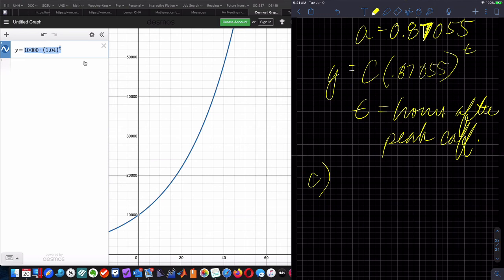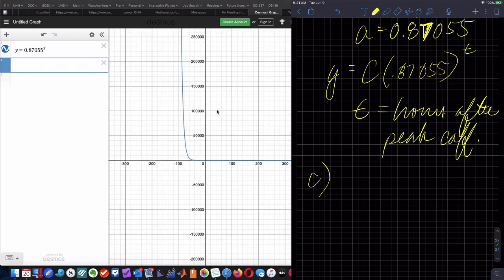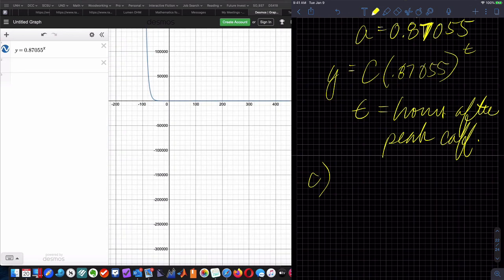So, I'm going to have C, but I'm just going to put 1 in there. So, in other words, I don't have to put C in at all, correct? And I'm going to put 0.87055 raised to the X or T. It doesn't matter. And now I'm going to zoom out and see this decay.